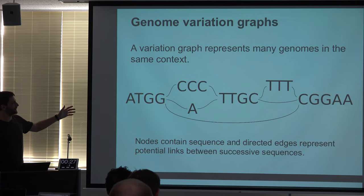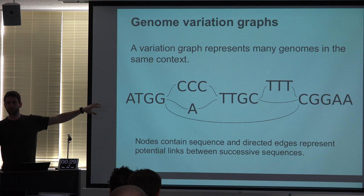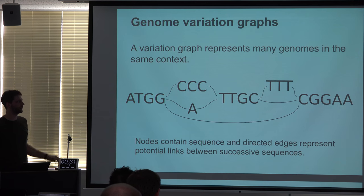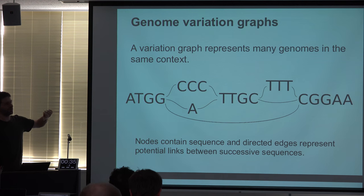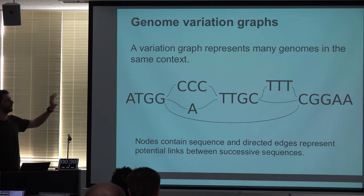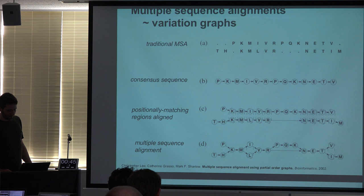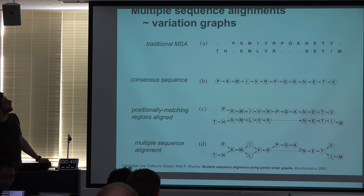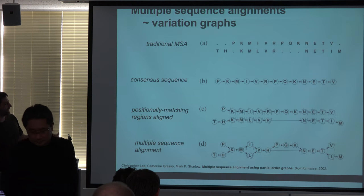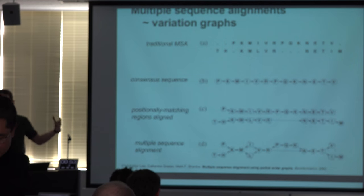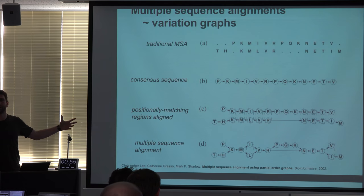The idea is that you have sequences on nodes, and the edges represent allowed linkages between them. You can take a walk through this graph and you'll make some genome that may exist — this is a model of a bunch of genomes, some of which might exist, some of which might just be allowed. Two important things to remember: this is not really novel stuff. People have been doing this since the very early days of bioinformatics.